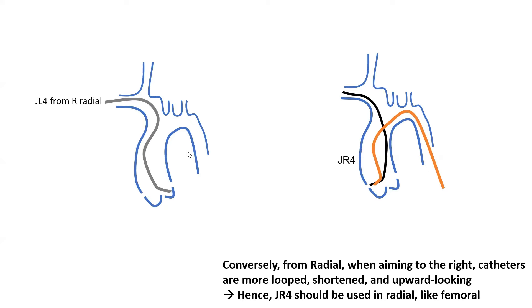We downsize catheters for the left coronary from a radial axis by a half. For the right coronary, interestingly, that curvature from the innominate actually makes the catheter, when aiming to the right side of the aorta, more loop-shortened and upward-looking. So it will tend to point more up. Therefore, we don't downsize the catheter for the RCA. If anything, it was previously recommended to upsize to a Jutkins right 5 from radial, though we rarely do that.